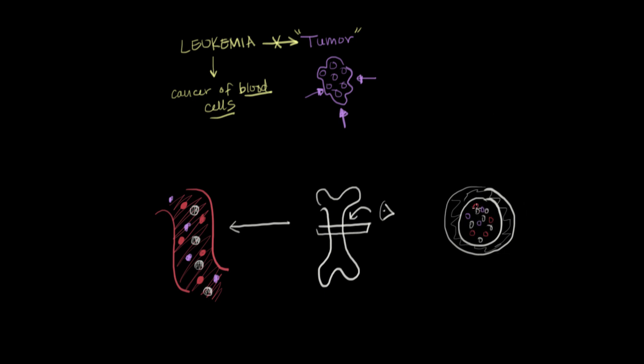But in leukemia, one of these cells - it could be a red blood cell, a platelet, or a white blood cell - starts multiplying really rapidly and out of control. And it starts overtaking the bone marrow, kind of like this. And that's a problem for two reasons. Firstly, this cell that's dividing really rapidly, this leukemia cell doesn't serve any function like a normal blood cell does.